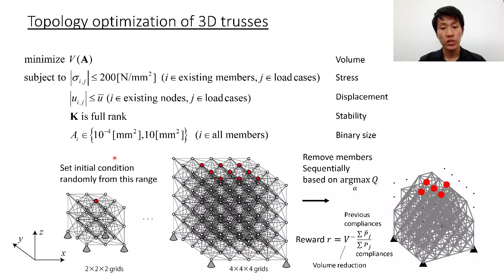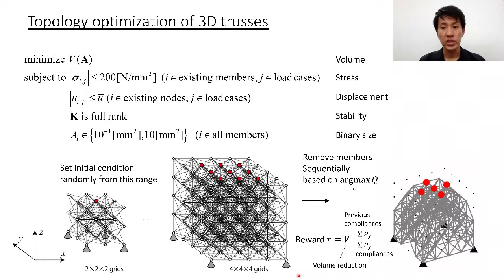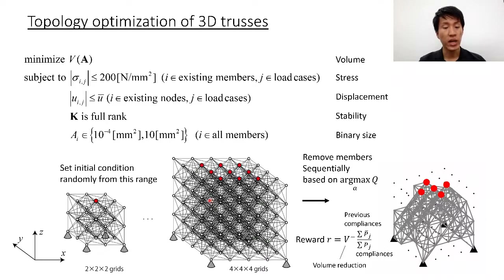The trusses used for training are shown below. The trusses have two to four grades in the X, Y, and Z directions. Each truss is pin-supported at the lower four endpoints, and the internal top nodes shown in red are candidates for loaded nodes. One or more of the red points are randomly selected, and three separate load conditions are provided in the X, Y, and Z directions respectively. This completes the initial condition setup.